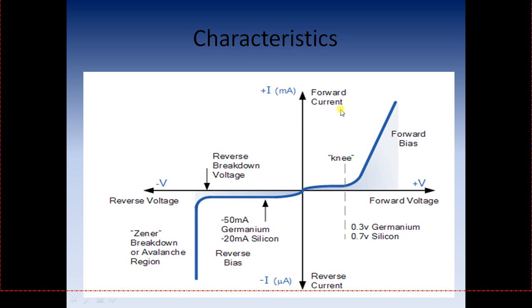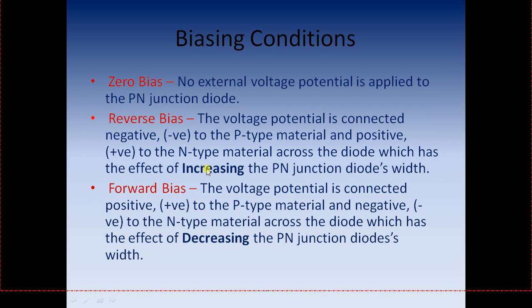We never want our reverse voltage to be greater than the reverse breakdown voltage. The biasing conditions are: zero bias — no external voltage potential is applied to the P-N junction diode; reverse bias — the voltage potential is connected negative to the P-type and positive to the N-type, which has the effect of increasing the width of the depletion region; forward bias — positive to the P-type and negative to the N-type, which has the effect of decreasing the P-N junction depletion region.